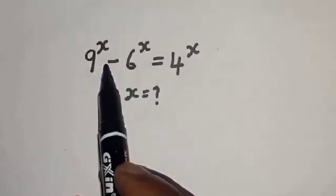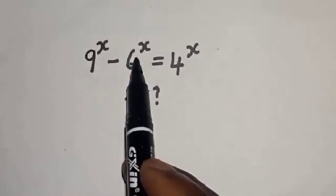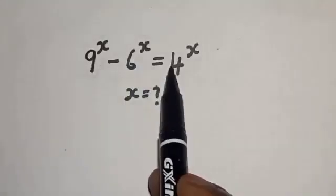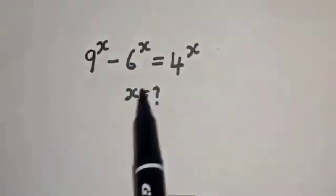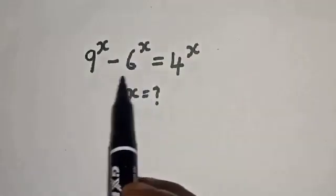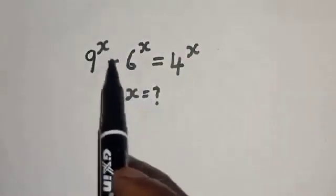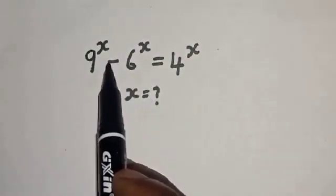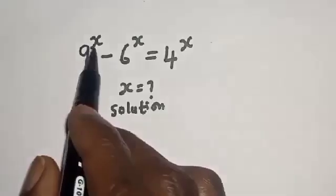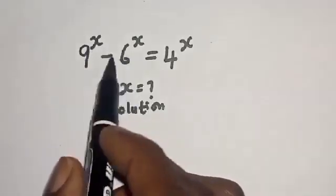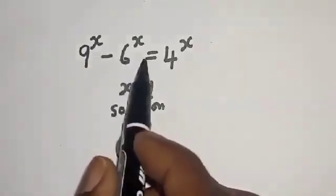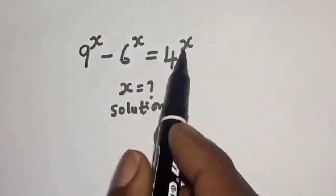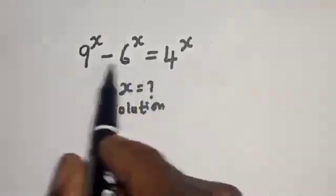9 raised to power s minus 6 raised to power s is equal to 4 raised to power s. I want to find the value of s from this given problem.